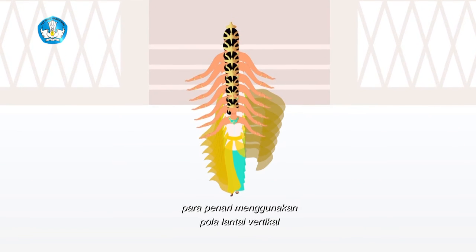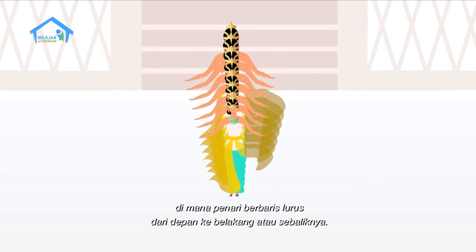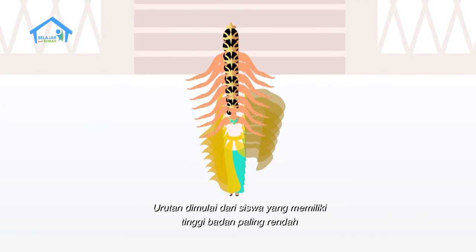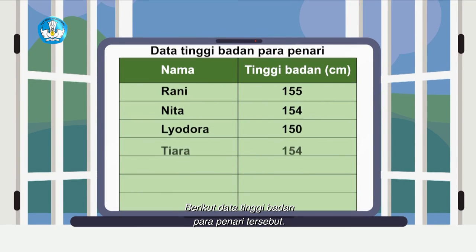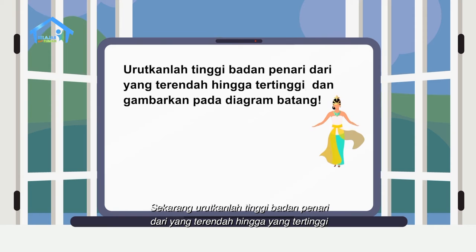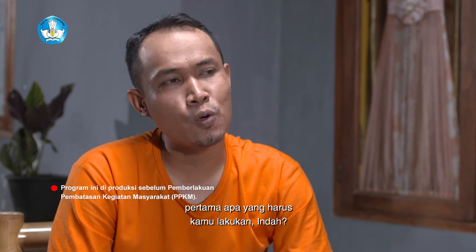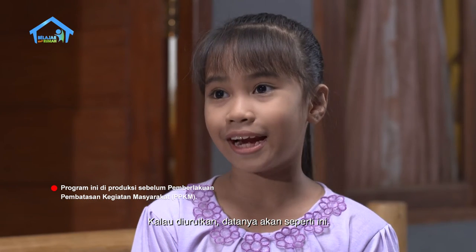Untuk pelajaran berikutnya, para penari menggunakan pola lantai vertikal, di mana penari berbaris lurus dari depan ke belakang atau sebaliknya. Urutan dimulai dari siswa yang memiliki tinggi badan paling rendah hingga tertinggi. Berikut data tinggi badan para penari tersebut. Sekarang, urutkanlah tinggi badan penari dari yang terendah hingga yang tertinggi dan gambarkan pada diagram batang. Untuk membuat diagram batangnya, pertama, data harus diurutkan dulu dari yang terendah sampai yang tertinggi.